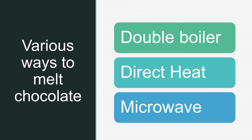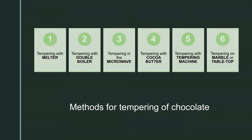The third method is by using a microwave. Place chocolate in a heatproof glass bowl or container and heat at medium power in 30-second intervals. Remove and stir each time before returning to the microwave. Each microwave is unique and affects chocolate differently, so monitor closely. When only small lumps remain, remove and continue to stir until completely melted.